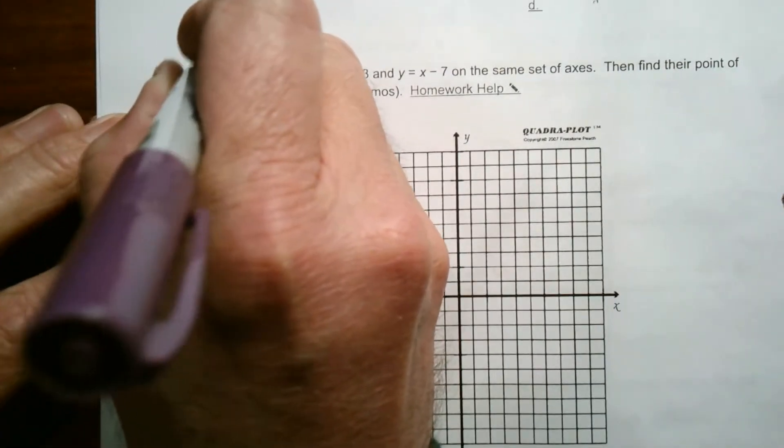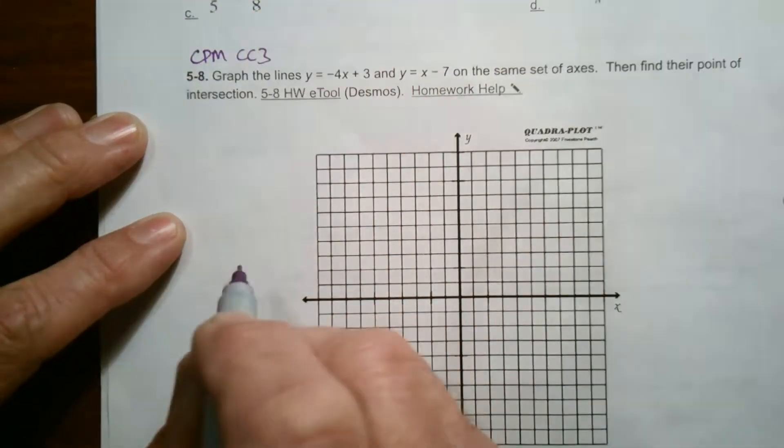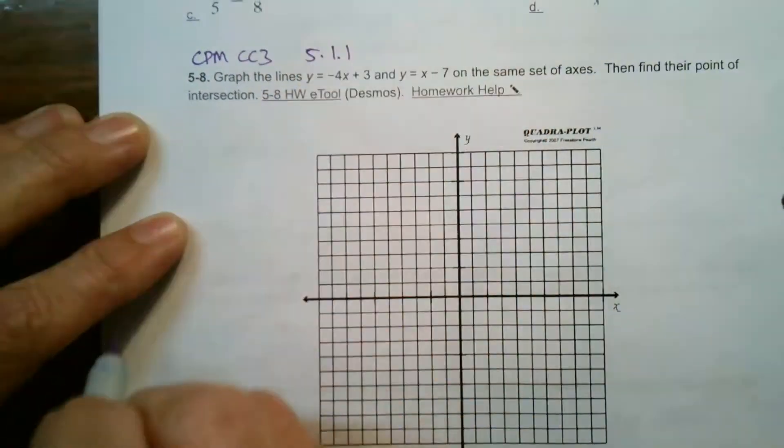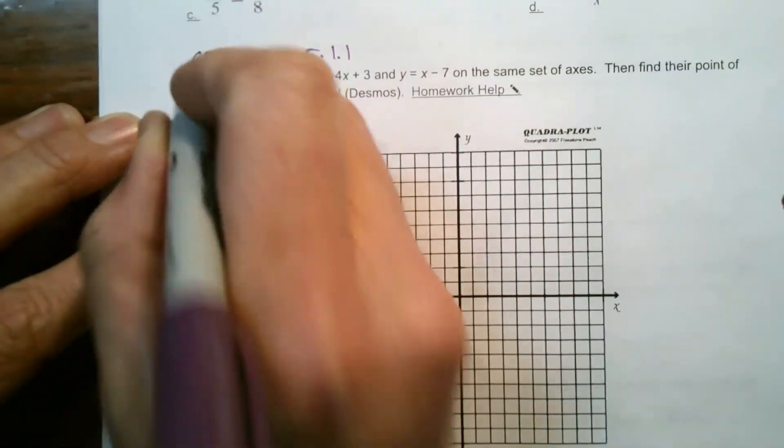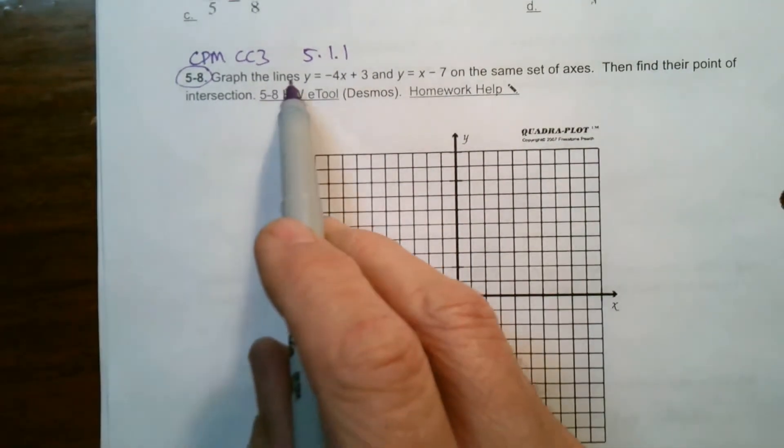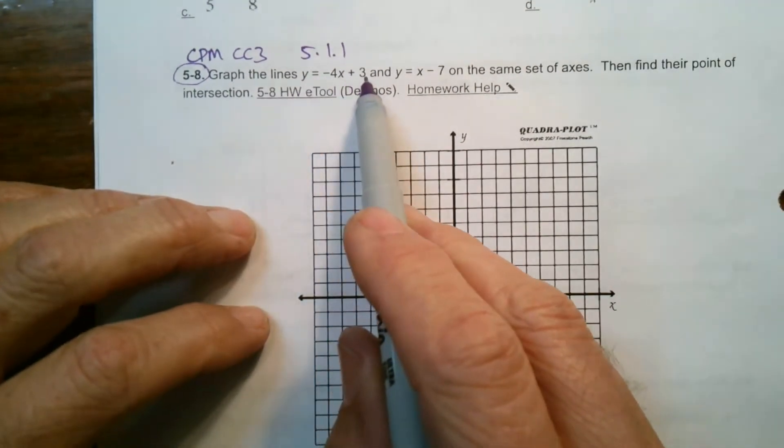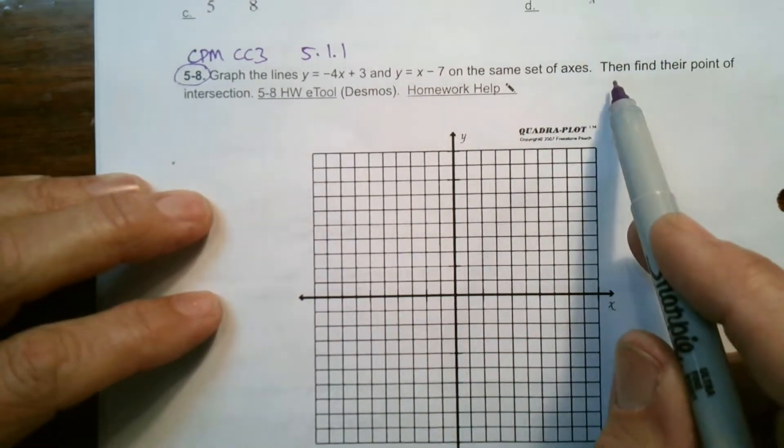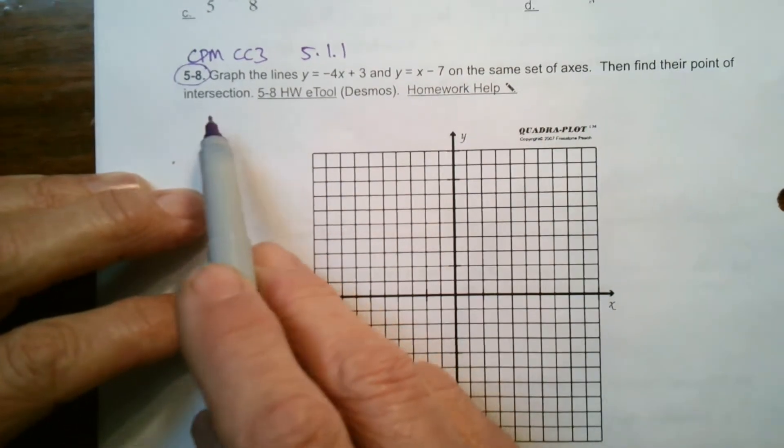So, this is a problem I'm taking from CPM and this is course 3. This is section 5.1.1, specifically number 5-8. So, it says here, graph the lines y equals negative 4x plus 3 and y equals x minus 7 on the same set of axes, then find their point of intersection.